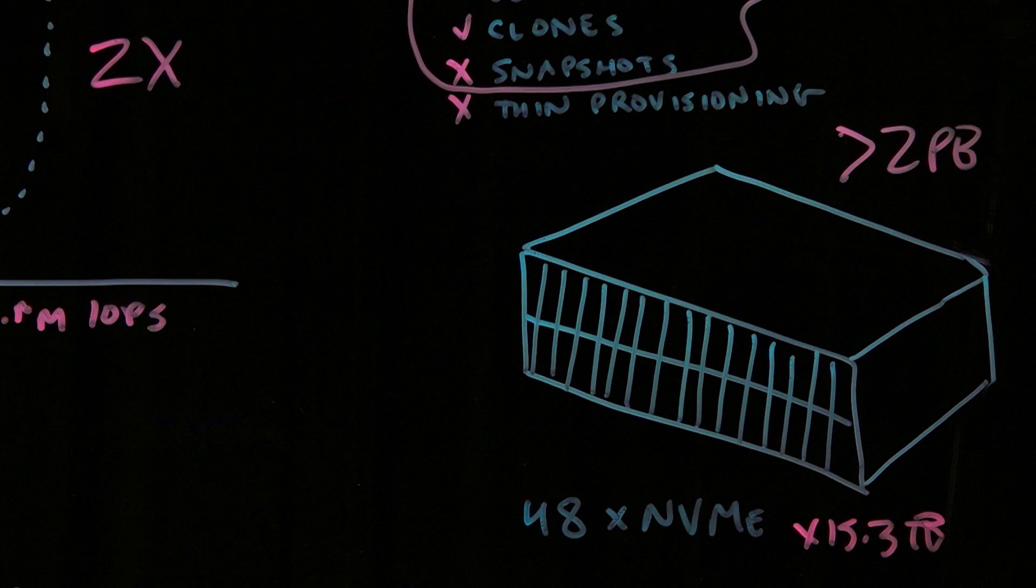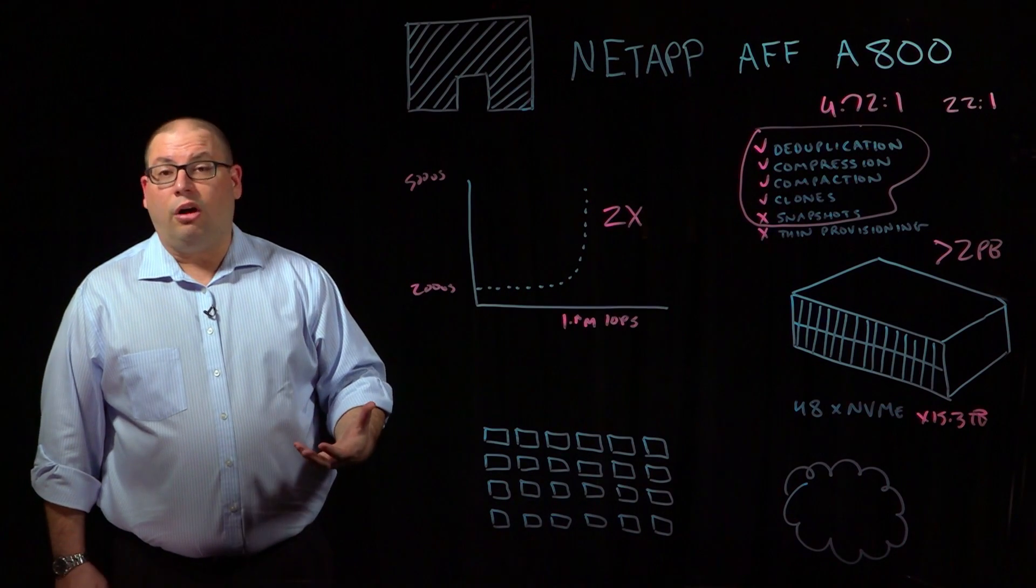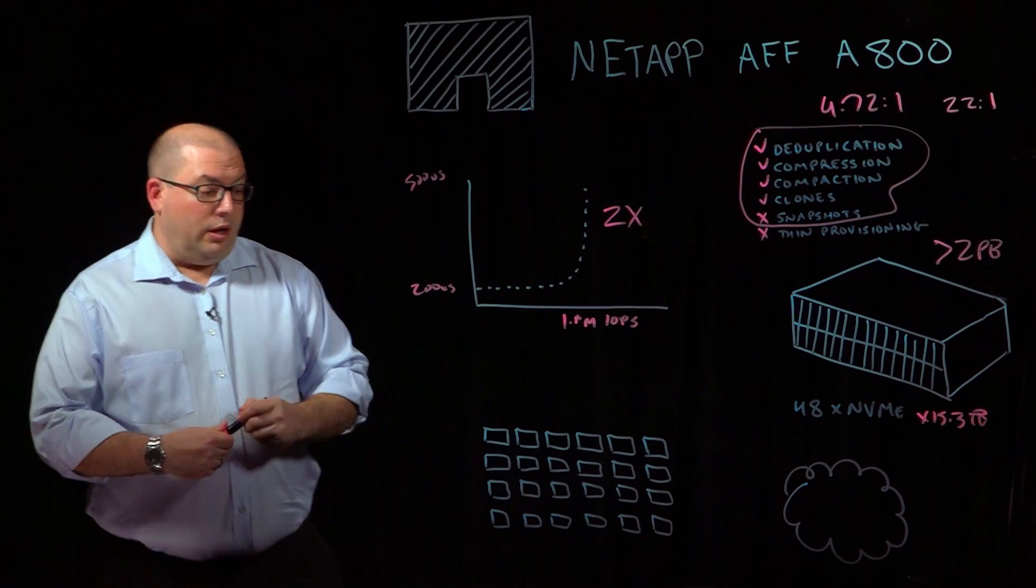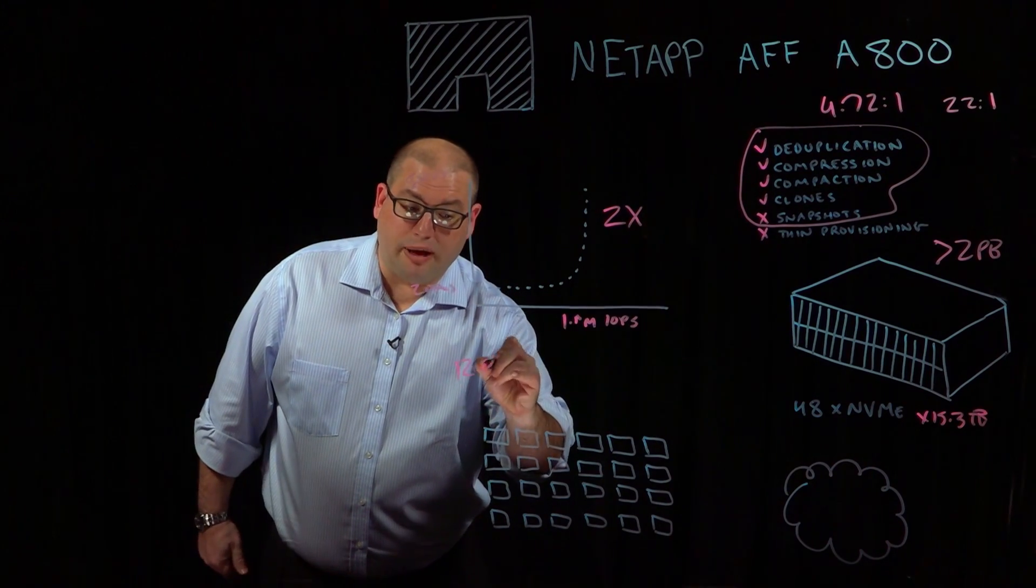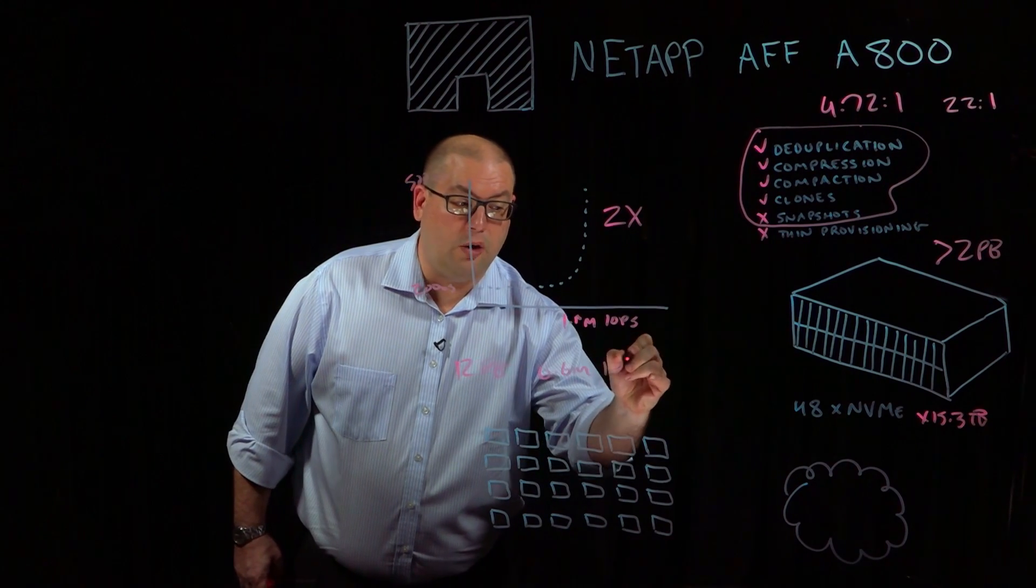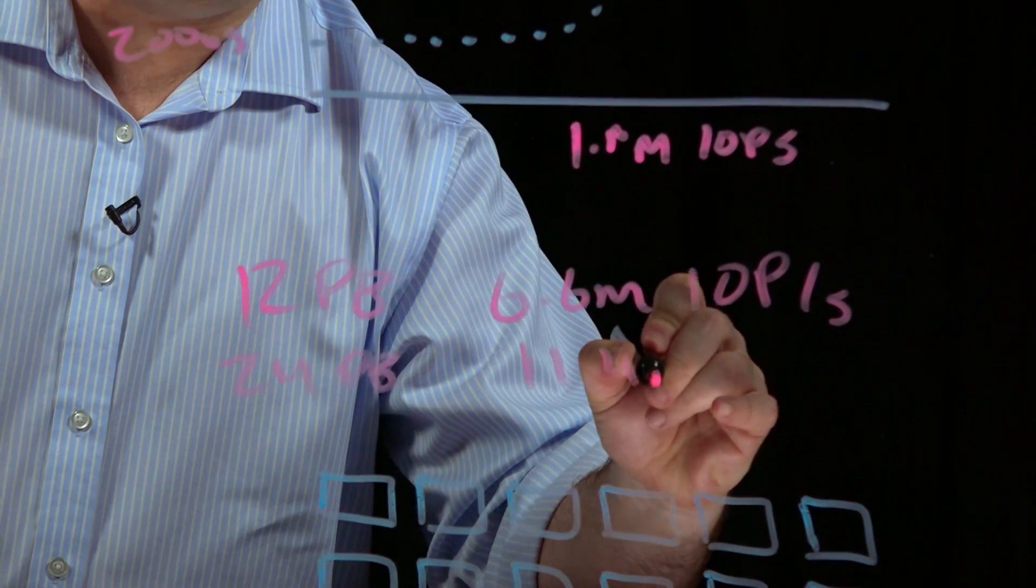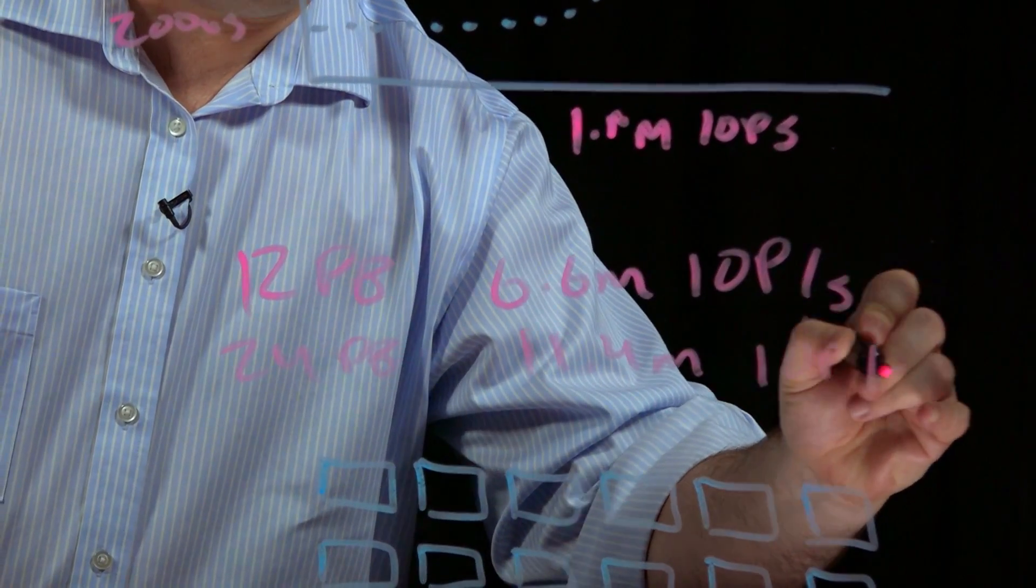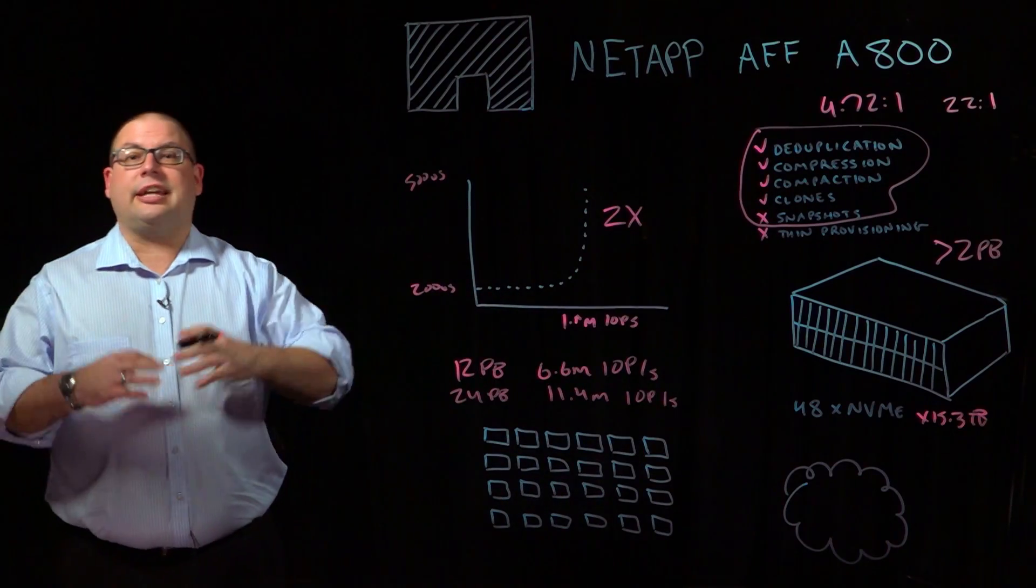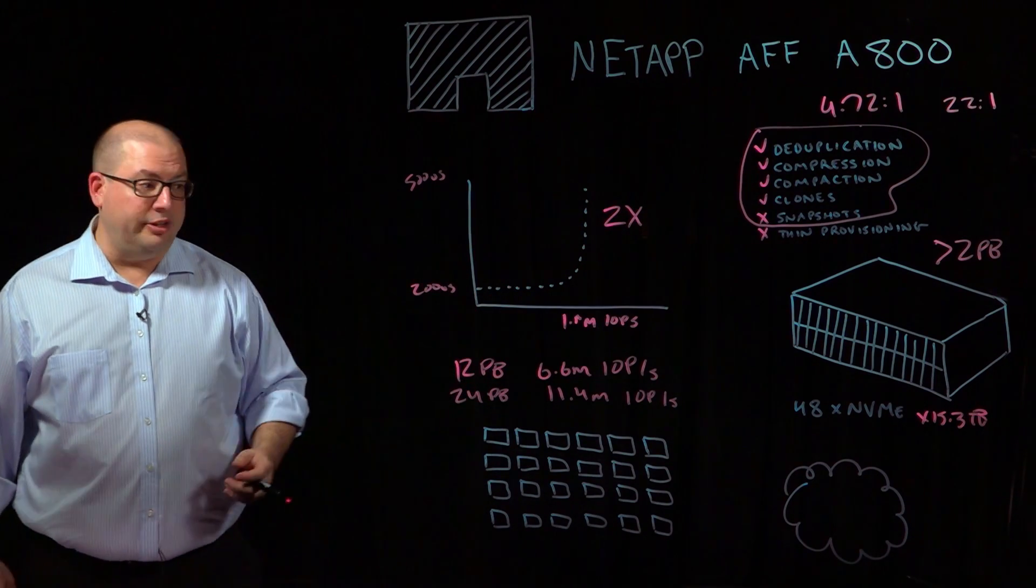If that amount of data is not sufficient for your business needs, the AFF 800 can also scale out seamlessly to cluster sizes of 12 or 24 nodes. On the SAN side, this would yield 12 petabytes of effective capacity with about 6.6 million IO operations per second, or 24 petabytes with around 11.4 million IO operations per second. So just amazingly fast, scale out seamlessly, non-disruptively for your application just by adding in controllers into the system.